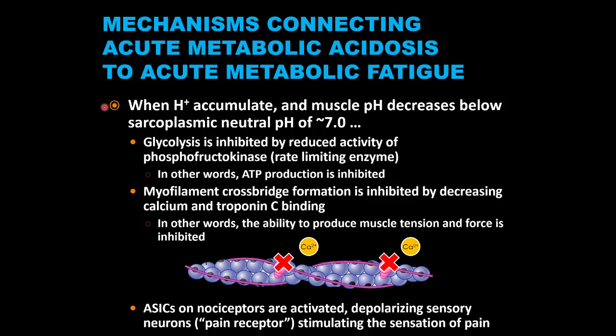How does proton accumulation in muscle cells during a hypoxic post-anaerobic threshold state interfere with muscle contractions? When protons accumulate and muscle cells undergo acidification, particularly to a pH below 7, several processes critical for muscle contractions are inhibited. First, as glycolysis ramps up to help meet the ATP demand during post-anaerobic threshold exercise, the ensuing proton accumulation will in turn slow glycolysis down, for the sake of slowing down the muscle.